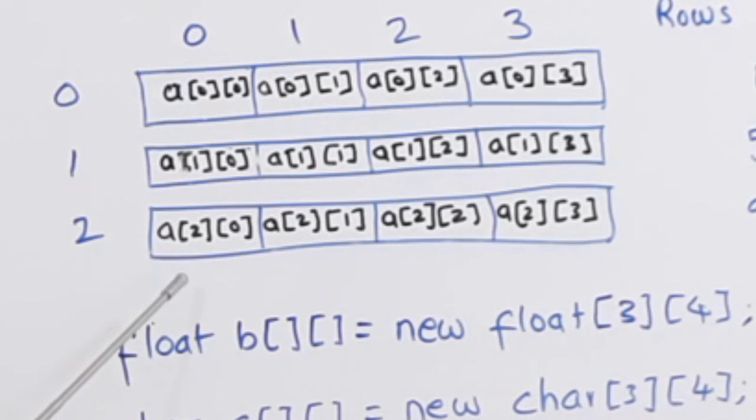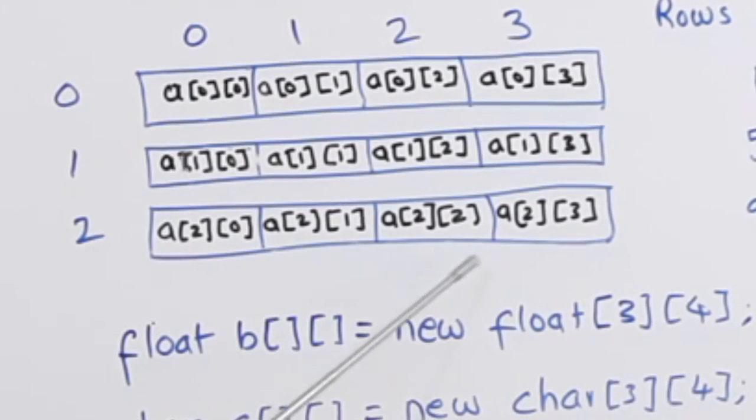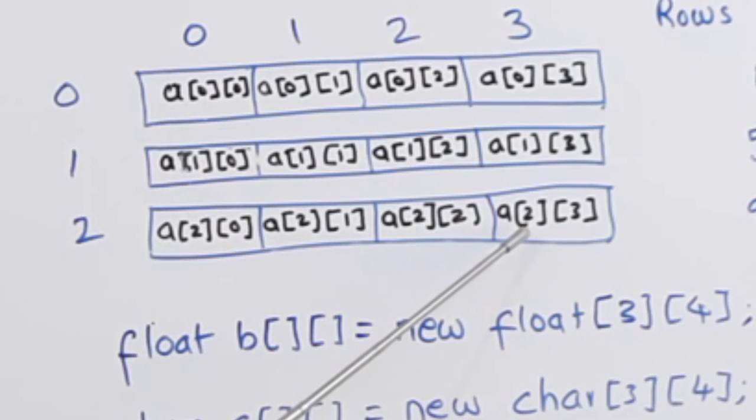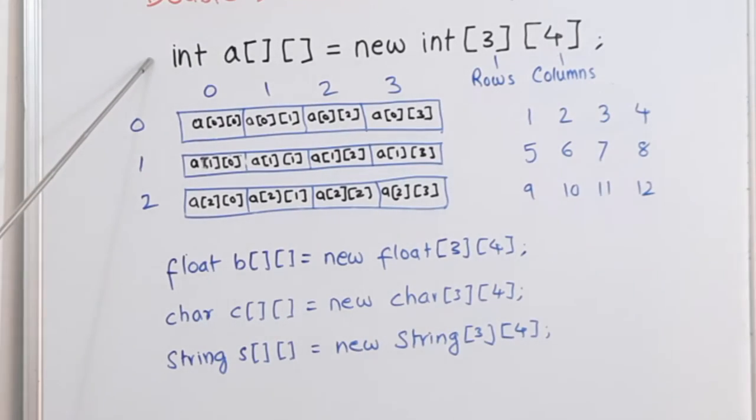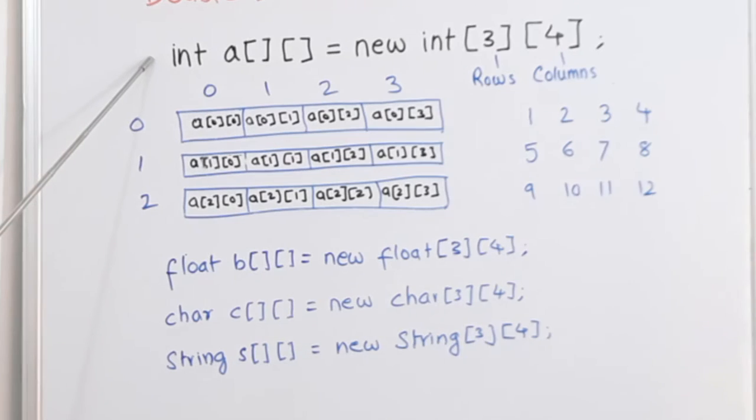In the third row: [2][0], [2][1], [2][2], and [2][3]. So this is how we will address the individual elements or the individual cells of a matrix of a double dimensional array. This was the way to create or declare an integer array.